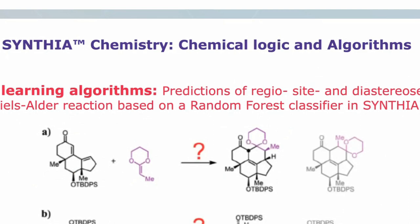Another example of Pillar 2 algorithmic improvements in Cynthia was taking an AI-based approach to augment the predictions of our reaction rules. A good example is the Diels-Alder reaction filter within Cynthia that enables better prediction of regioselectivity, diastereoselectivity, and site selectivity of Diels-Alder reaction products based on a random forest classifier. Some examples of these predictions show that the filter correctly predicts the outcome of these reactions. Examples from classical total synthesis are shown, with incorrect products — which were indeed not proposed by Cynthia — also not obtained experimentally.